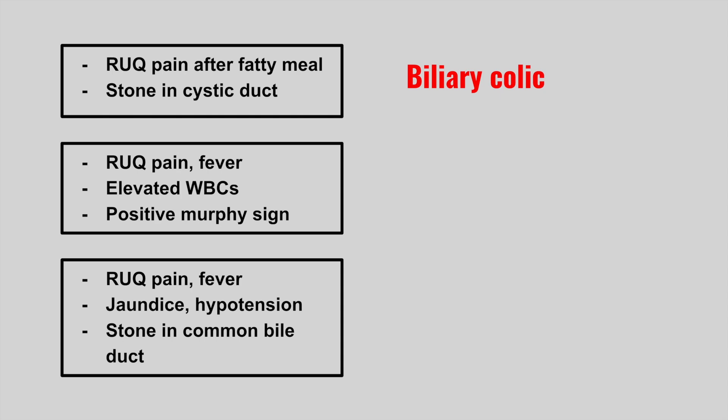The next patient has right upper quadrant pain, fever, elevated white blood cells, and a positive Murphy sign — when you push down on the right upper quadrant they get inspiratory arrest. This is cholecystitis. Usually there is a gallstone that becomes inflamed. You can also have acalculous cholecystitis with no stone, typically in a very sick ICU patient with similar symptoms.